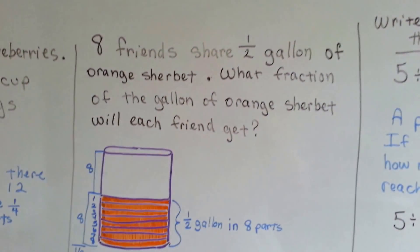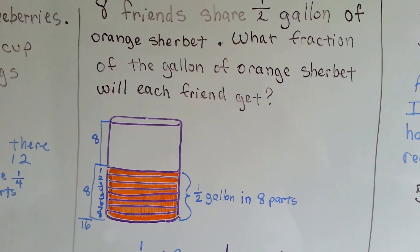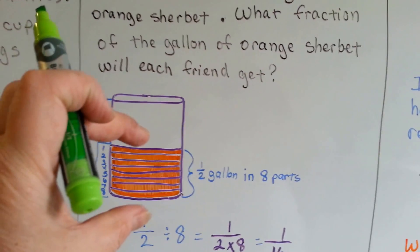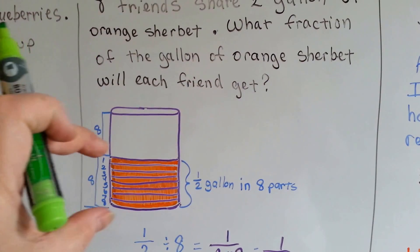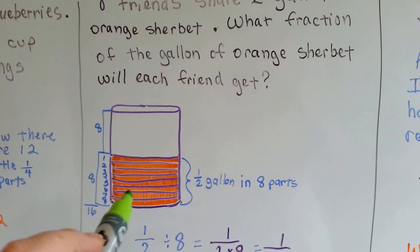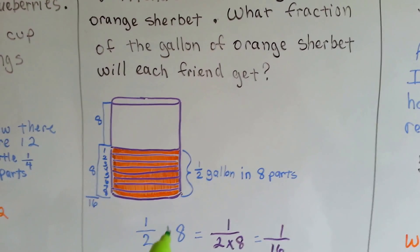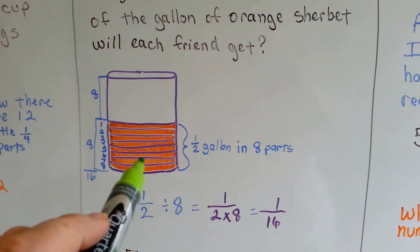Eight friends share a half a gallon of orange sherbet. What fraction of the gallon of orange sherbet will each friend get? So here's the half gallon, and if eight friends need to split this, we need to split this into eight pieces.